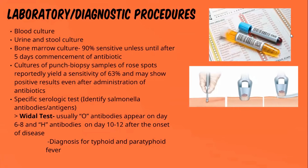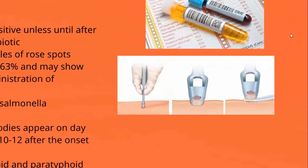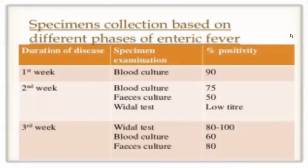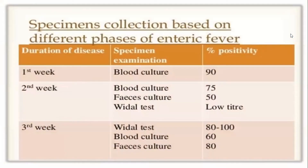There is also a specific serologic test — the Widal test — which identifies Salmonella antibodies. The O antibodies appear on day 6 to 8, and H antibodies on day 10 to 12 after the onset of disease. The Widal test is used for the diagnosis of typhoid and paratyphoid fever. For specimen collection by disease phase: during the first week, blood culture shows 90 percent sensitivity; in the second week, blood and urine culture are used; in the third week, the Widal test shows 80 to 100 percent, and blood culture shows 60 percent sensitivity.